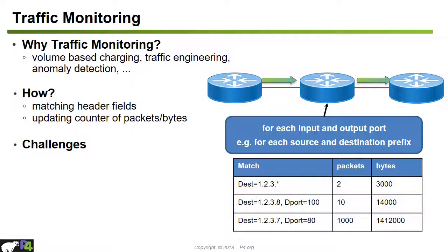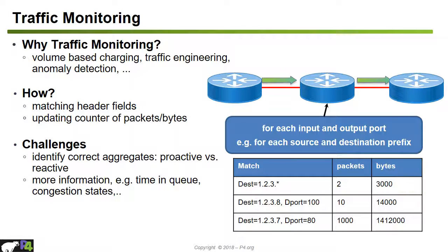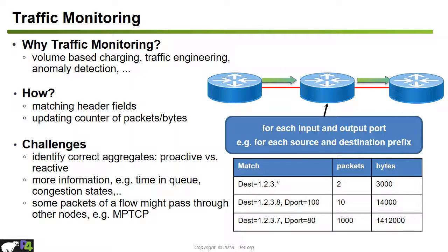We also want to identify more information, such as how much time each flow has spent in the queue and the congestion state of the switch. Some packets of a flow might pass through different nodes — for example, in MPTCP connections, sub-flows may be routed over different paths, so not all information is necessarily available within a single switch for anomaly detection. Typically, traffic monitoring information must be passed to other devices or monitoring platforms that can aggregate data from many switches for a better view of traffic volume.